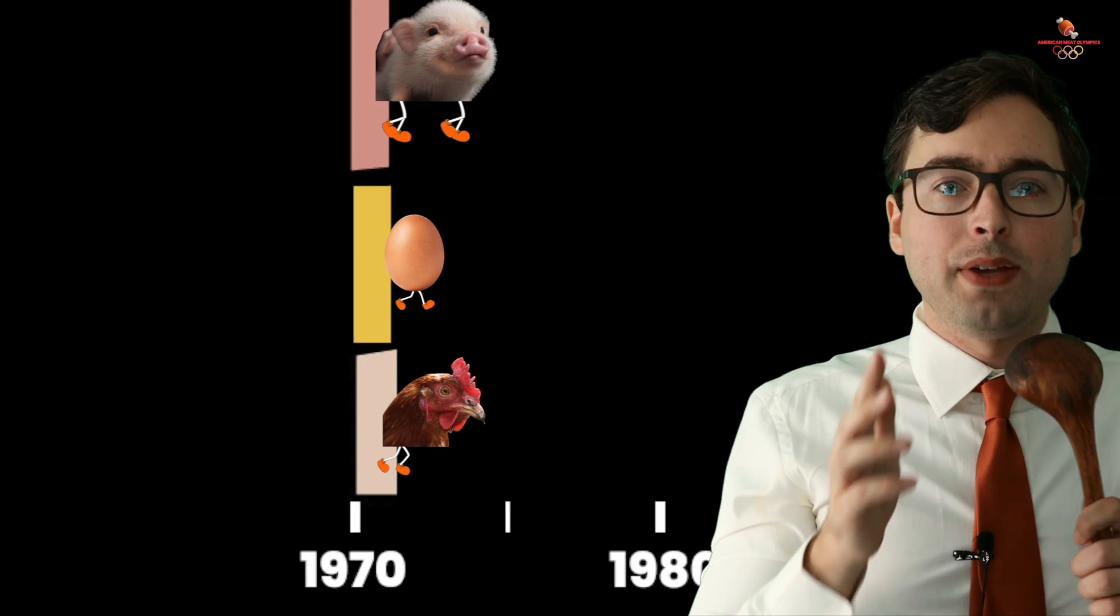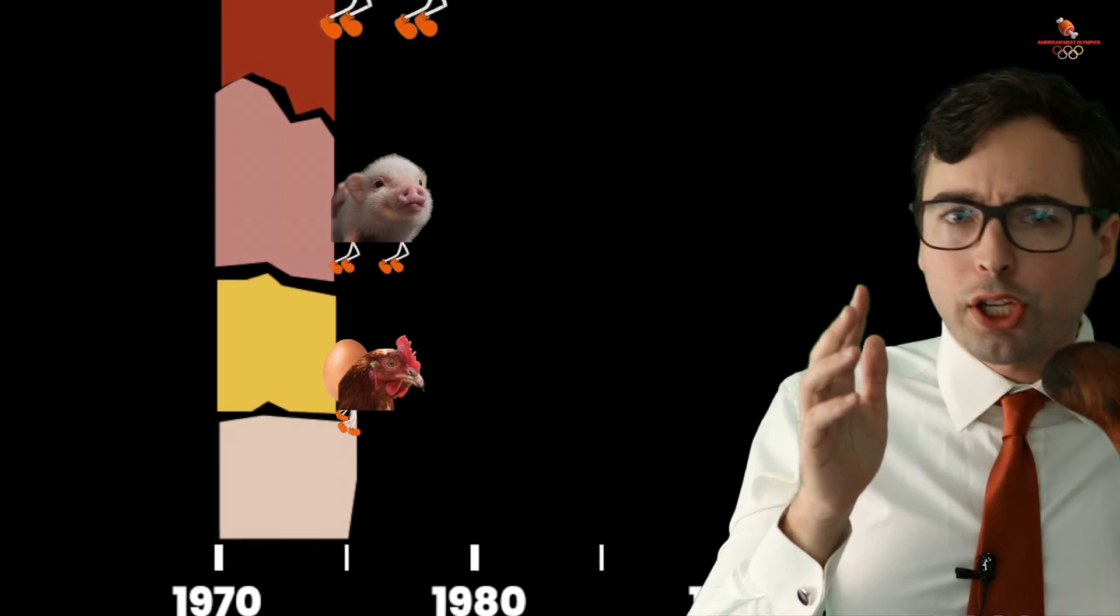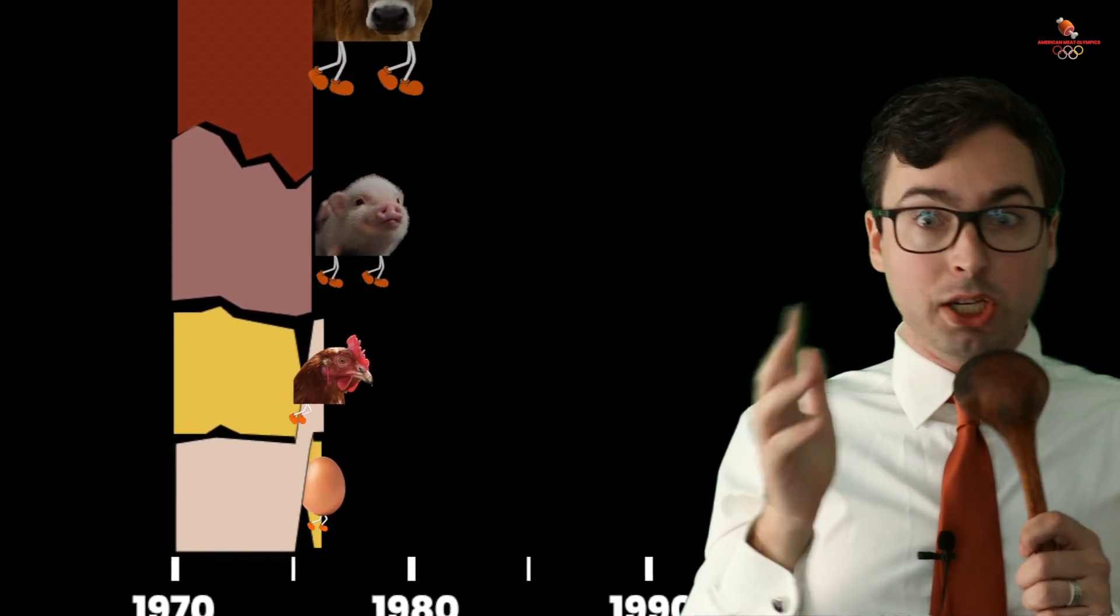And they're off. The athletes approach the 1975 mark and it looks like factory farms are breeding fatter, cheaper chickens. Chickens push past their own eggs for the first time in human history.